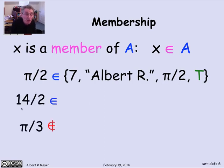14 over 2 is also a member of that set, because 14 over 2 is just another description of 7. When I write 7 here, I don't mean the character 7, I mean the number 7. And so 14 over 2 is a description of the same number. On the other hand, pi over 3 is a number that's simply not in that set. So I'm using the epsilon with a vertical bar through it to mean not a member of.